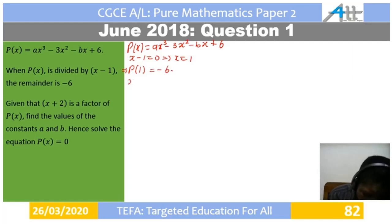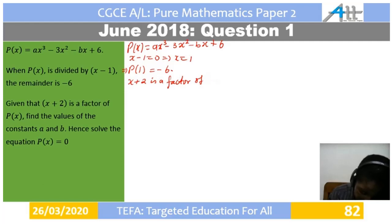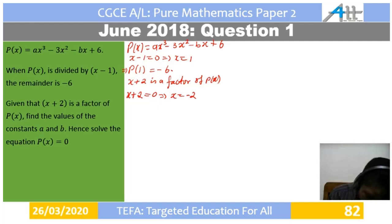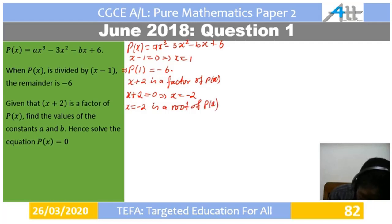Next, we are told that x plus 2 is a factor of P of x. x plus 2 is 0 when x is negative 2, so x equals negative 2 is a root of P of x. Therefore P of negative 2 equals 0.